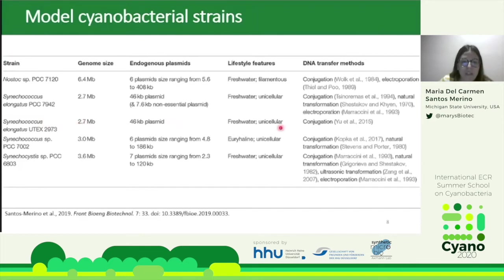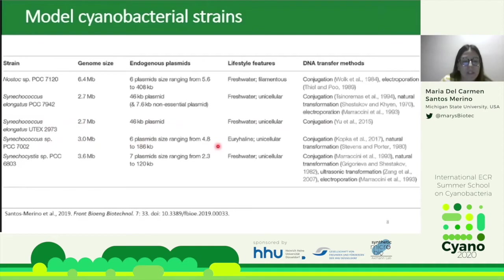One of those SNPs affects a protein involved in natural transformation, which is why UTEX 2973 can only be transferred by conjugation. We also have a euryhaline cyanobacterium, Synechococcus sp. PCC 7002, which contains six plasmids and a small genome, but requires vitamin B12 to grow, making it expensive for industrial production.